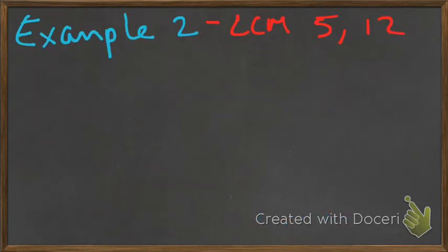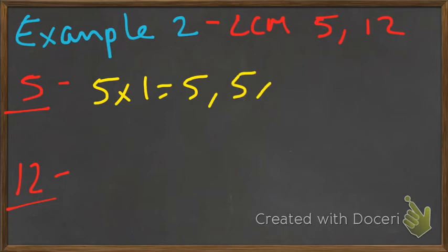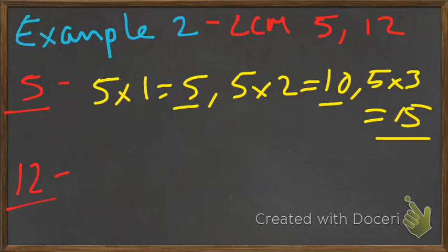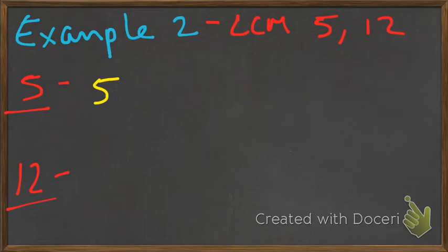Let's try another example. We're going to use different numbers here. We're going to use five and twelve. Same idea. We're going to take five, take twelve, and list off all of the multiples. Now remember, multiples for five: five multiplied by one equals five, five multiplied by two equals ten, five multiplied by three equals fifteen. So these are where our multiples are coming from.